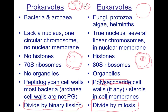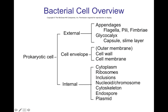We'll go deeper into that in the future. But the overview is: eukaryotes divide by mitosis, prokaryotes divide by binary fission. Prokaryotes have a 70S ribosome while eukaryotes have an 80S ribosome. Prokaryotes lack organelles, eukaryotes have organelles. Let's look at the bacterial cell.